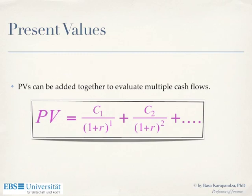You can add present values because we know how to calculate the present value of each cash flow. The present value of a cash flow in year one is discounted by (1 + R) to the power of 1; in year two by power of 2. We can add these two numbers because both are in today's dollars. You cannot add C1 plus C2 directly — $100 in one year plus $100 in two years is not $200 today. But once discounted, you can add them.